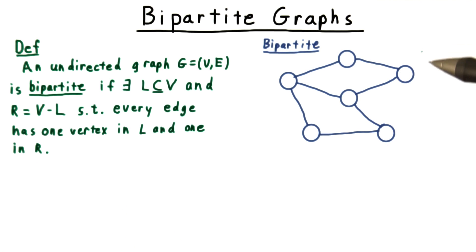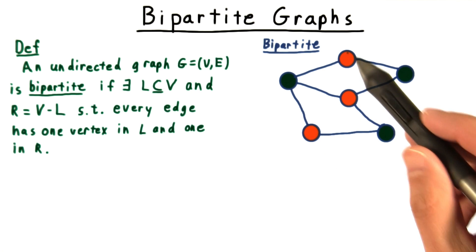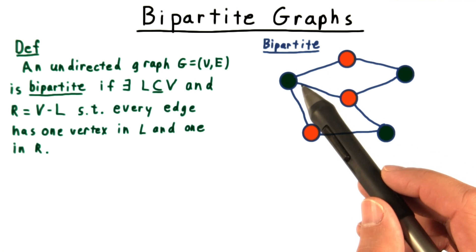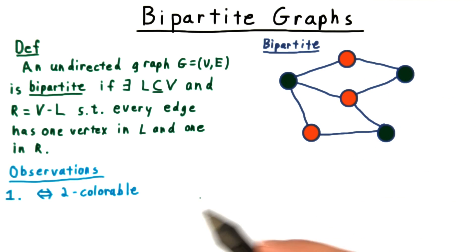For example, this graph here is bipartite. I can label the green vertices as L and the orange ones as R, and then every edge has one vertex that's green and one that's orange.